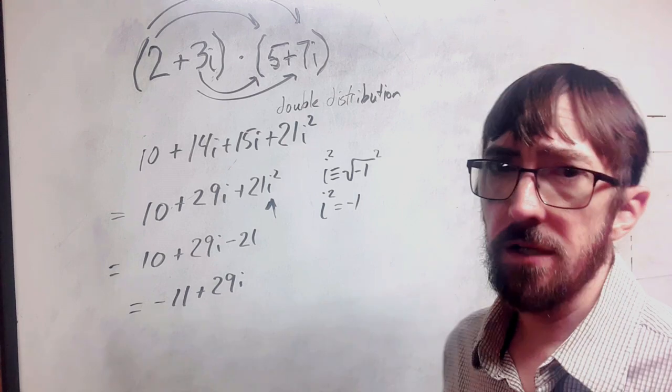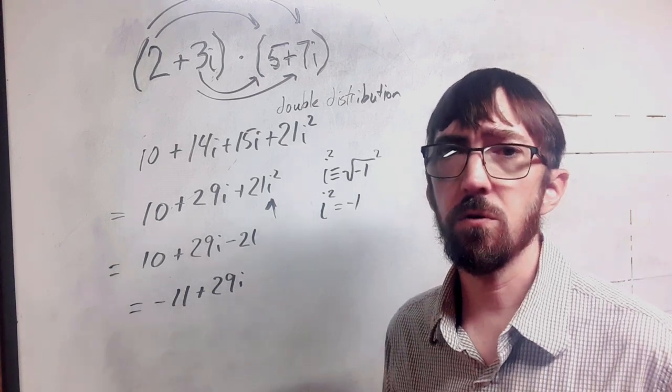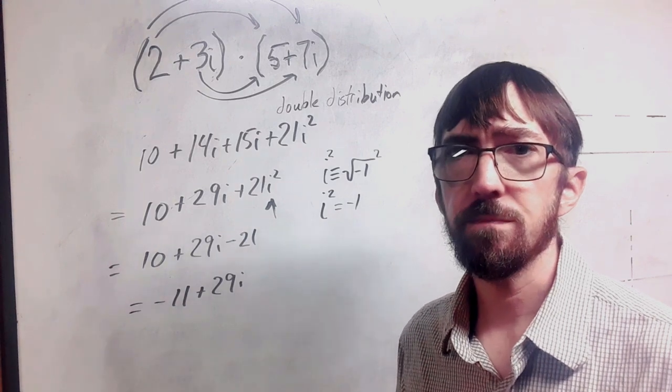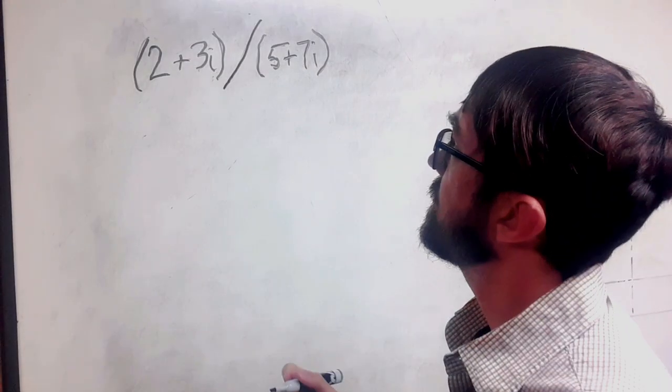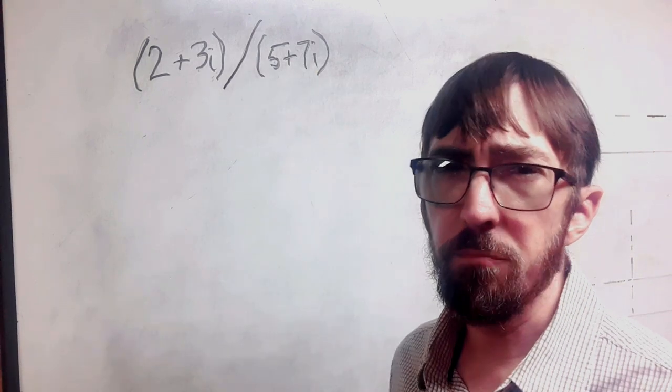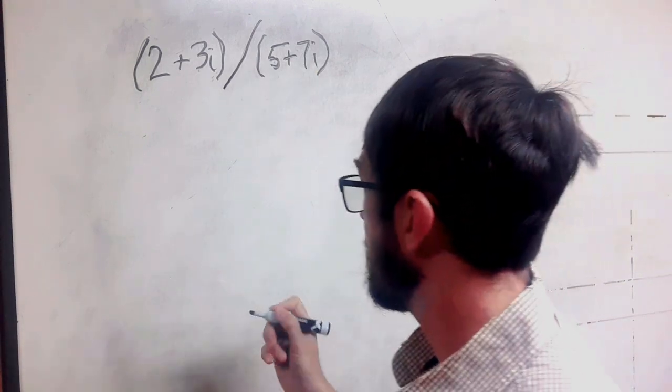And then the last one is division. And that is the most difficult to approach. All right, lastly, we have division. I'm going to rewrite this as a fraction. That's best to approach it like that.